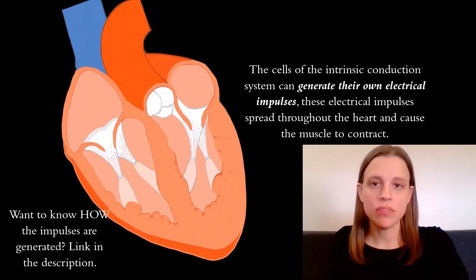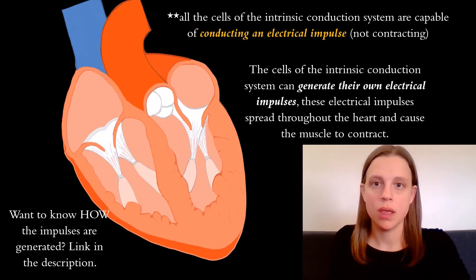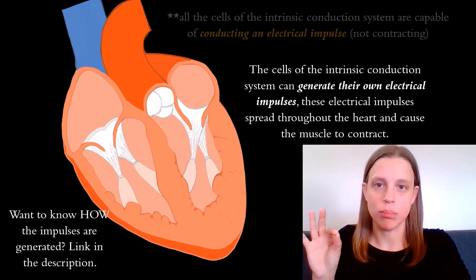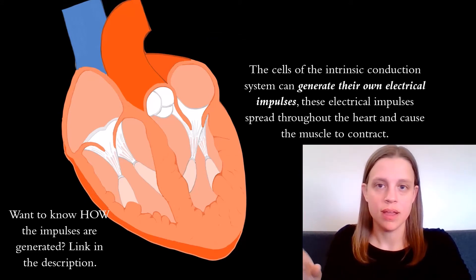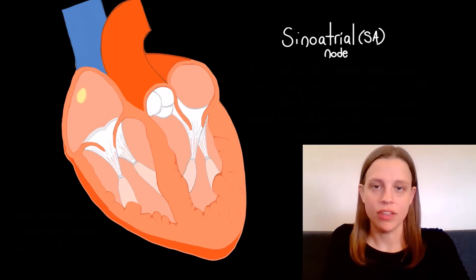Even though all of the cells in the intrinsic conduction system are capable of contracting, there's one especially important group of cells that leads the rest of them, and this is the sinoatrial node.